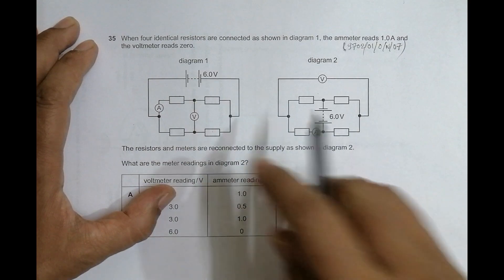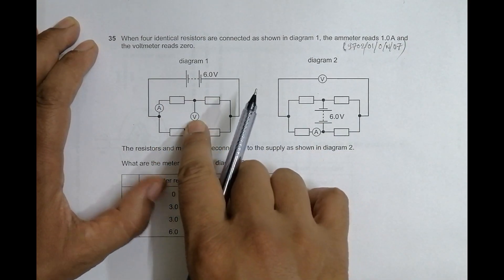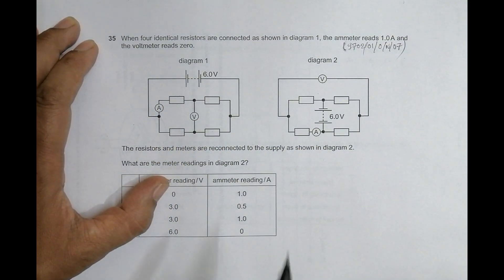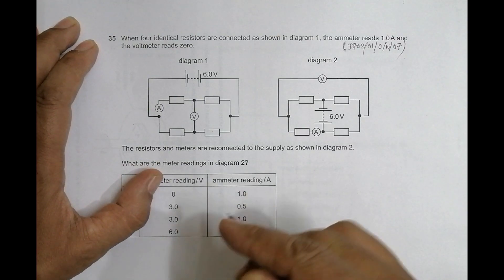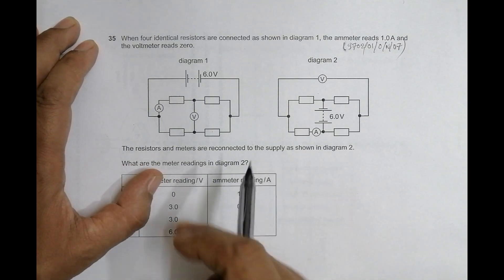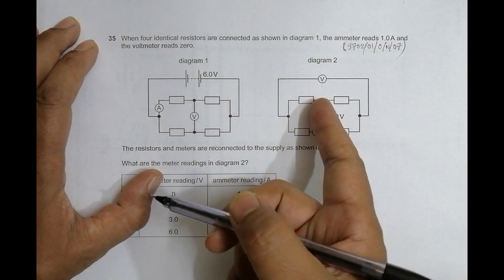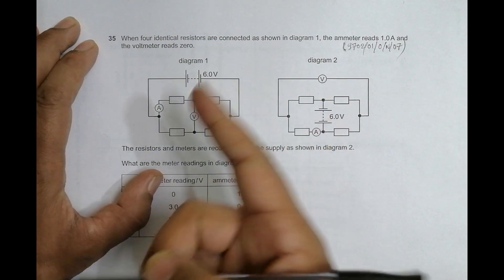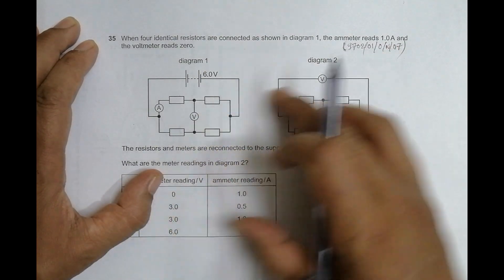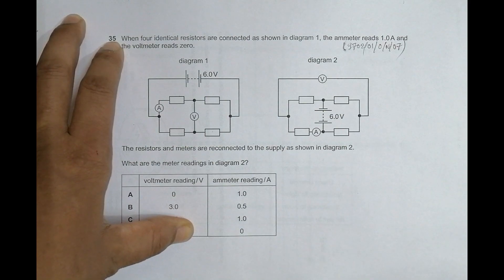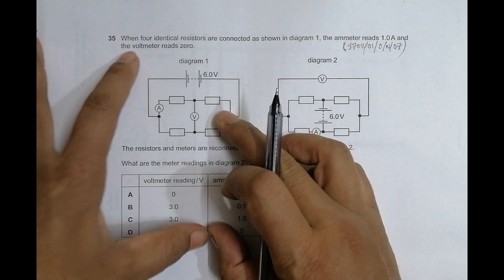Since all four resistors are identical and the voltmeter reads zero, the whole circuit is in a state of balance. What we need to do is find any similarity between the connection in diagram one and the connection in diagram two, and then we can proceed.